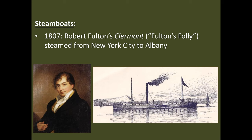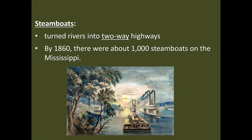In 1807, Robert Fulton decides to take a James Watt-type steam engine, put it on a boat with a paddle wheel, and take this boat up and down the Hudson River from New York City to the state capital of Albany. The steamboat turns rivers into two-way highways — because before the steamboat, you could go downstream with the current, but going upstream was nearly impossible. Now, you can go both ways. By 1860, there are about a thousand steamboats on the Mississippi alone. So this is a technology that's going to really transform how we transport people and goods.